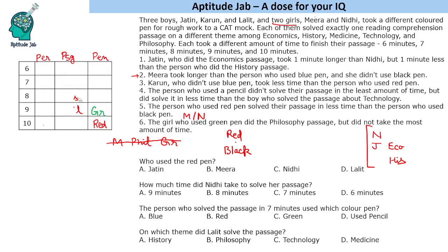Since neither arrangement works for Mira, the girl who uses the green pen is not Mira — it must be Nidhi. So Nidhi did the philosophy passage with a green pen.